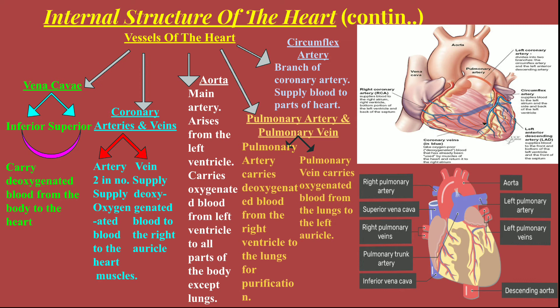The pulmonary vein carries blood to the heart, that is why it is known as a vein; otherwise it would have been called an artery. All other veins carry deoxygenated blood to the heart. Any vessel carrying blood to the heart is a vein, and any vessel carrying blood out of the heart is an artery. The circumflex artery is a branch of the coronary artery, supplying blood to some parts of the heart.